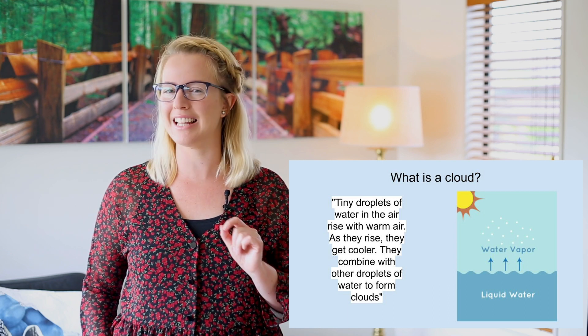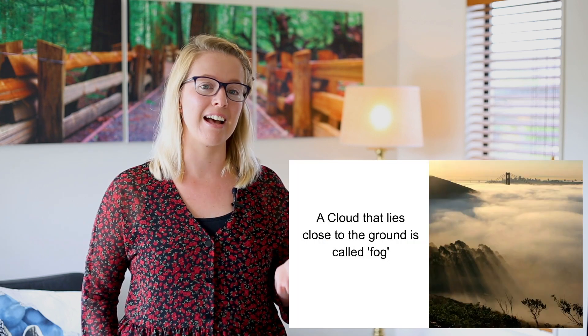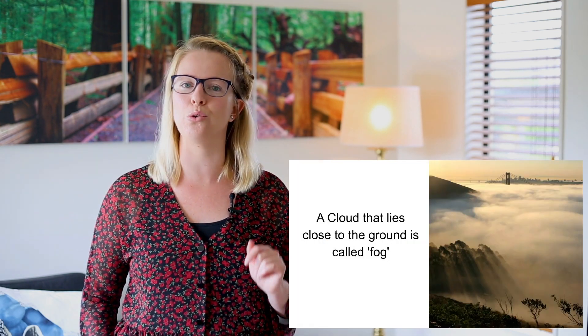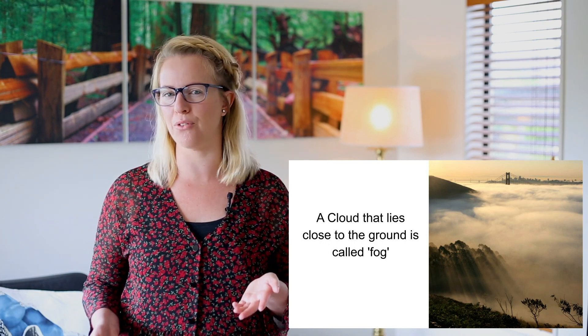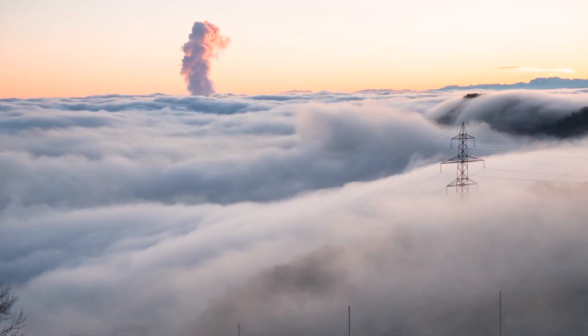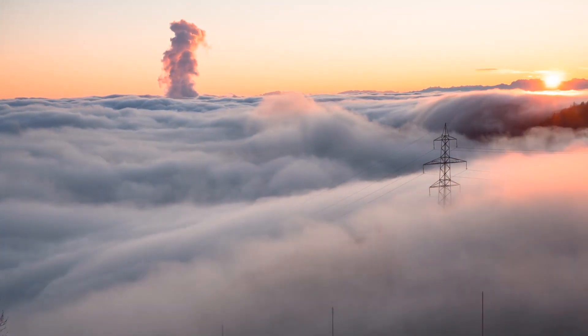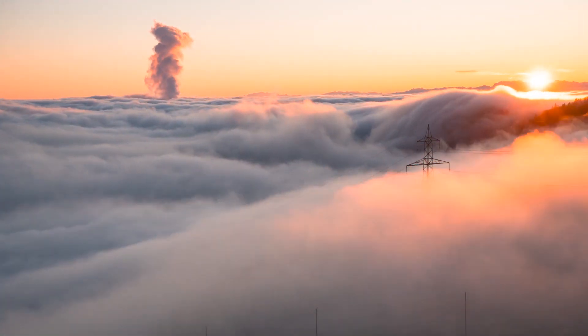Now let's look at some facts about different types of clouds. A cloud that lies close to the ground is called fog. I'm sure you've seen it before. I know that I've seen it here in New Zealand, but I've seen lots and lots of fog whilst I've been living in the UK. It normally happens in the morning, but I've seen it at all different times of the day.